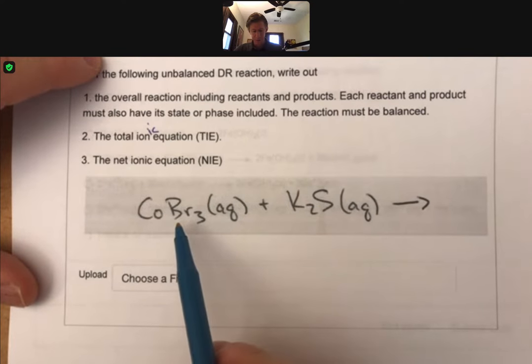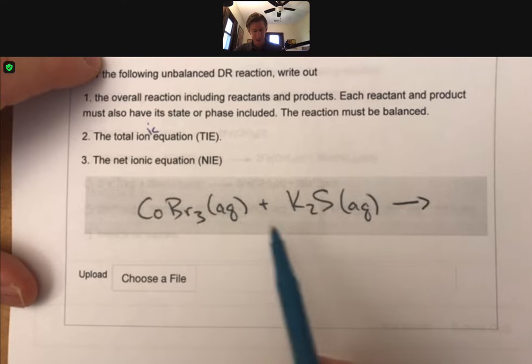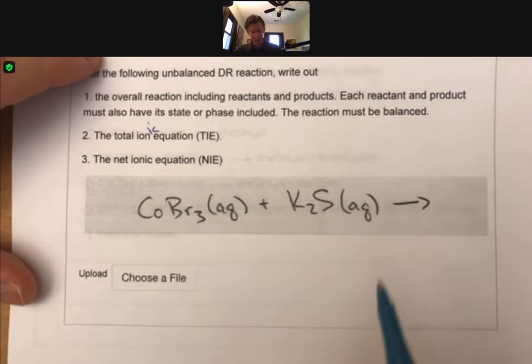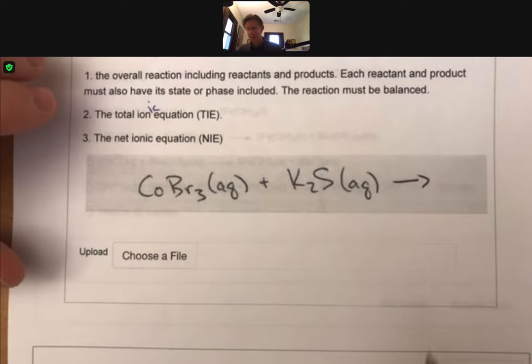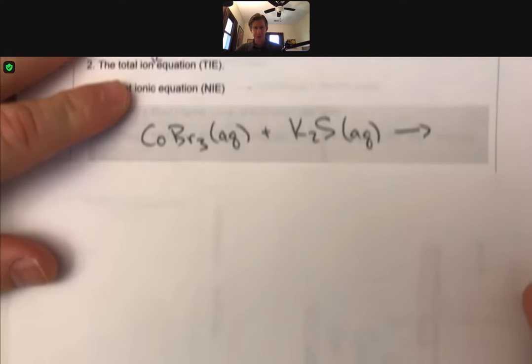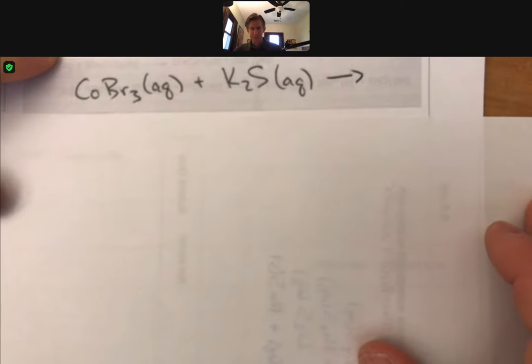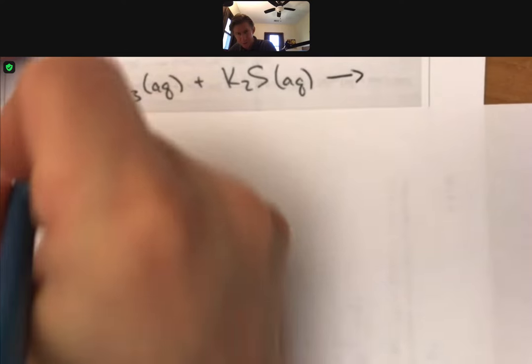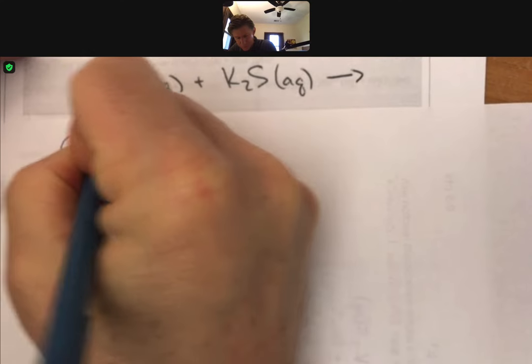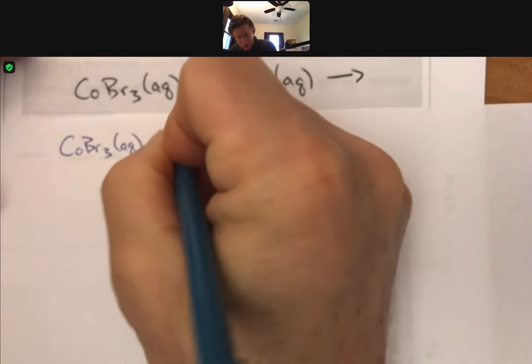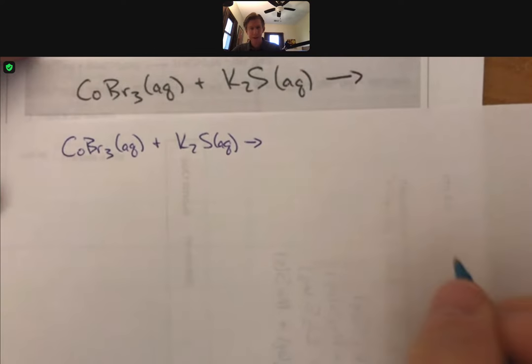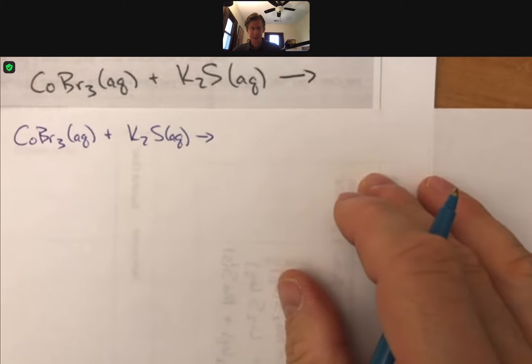Cobalt three bromide plus potassium sulfide. And I'm going to actually go ahead and do this on a separate piece of paper because otherwise I don't know if I'll have enough room. And I'm telling you that the two of these are aqueous so we don't have to worry about that.